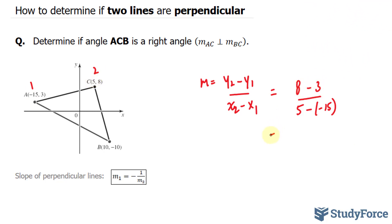That being said, 8 minus 3 is equal to 5. 5 minus minus 15 — that's like saying 5 plus 15. 5 plus 15 is 20. This reduces to a quarter. I just found the slope of AC.